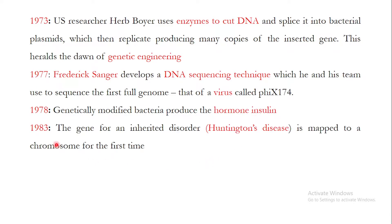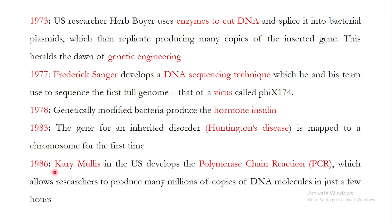In 1983, the gene for the inherited disorder Huntington's disease was mapped to a chromosome for the first time. In 1986, the polymerase chain reaction (PCR) was developed by Kary Mullis, allowing researchers to produce many million copies of a DNA molecule in just a few hours.